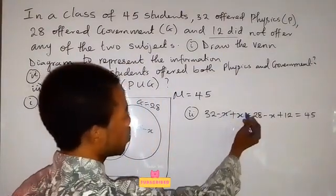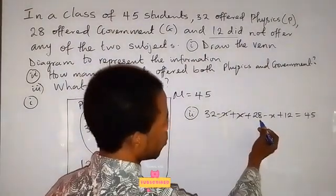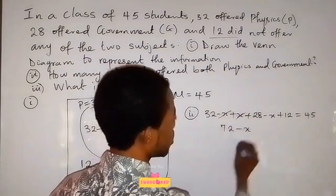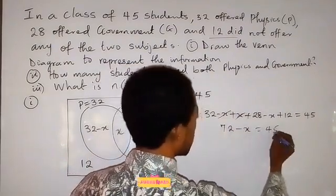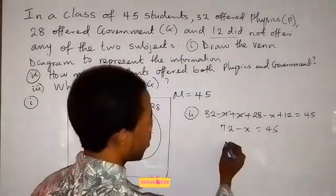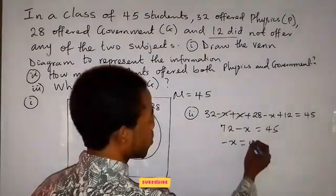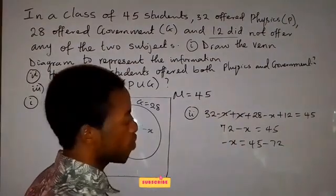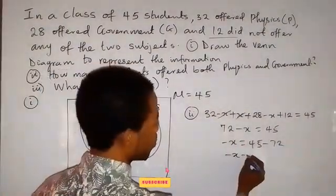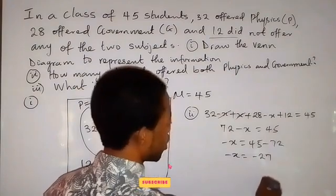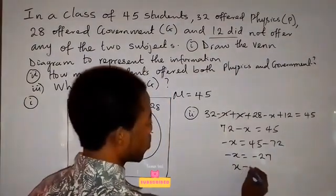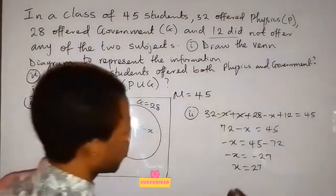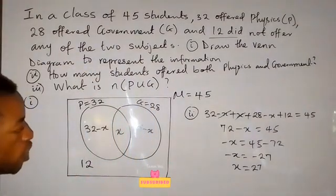Then by the time we solve this now, we will have 72 minus x equals to 45. Then minus x equals to 45 minus 72, minus x equals to minus 27, then minus times minus gives x equals to 27. So that means people that offer both physics and government are 27 students here now. So that's the solution to that.